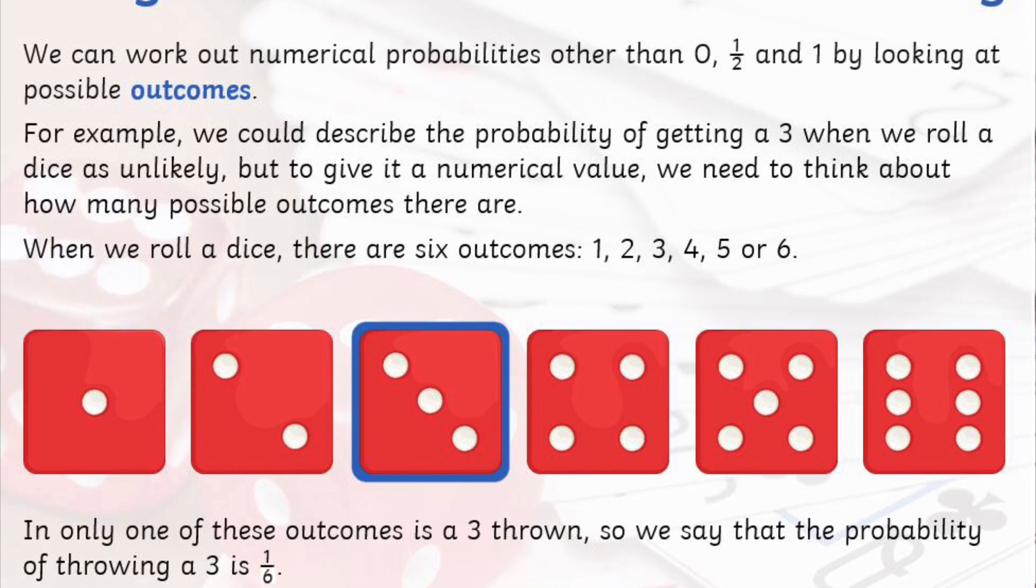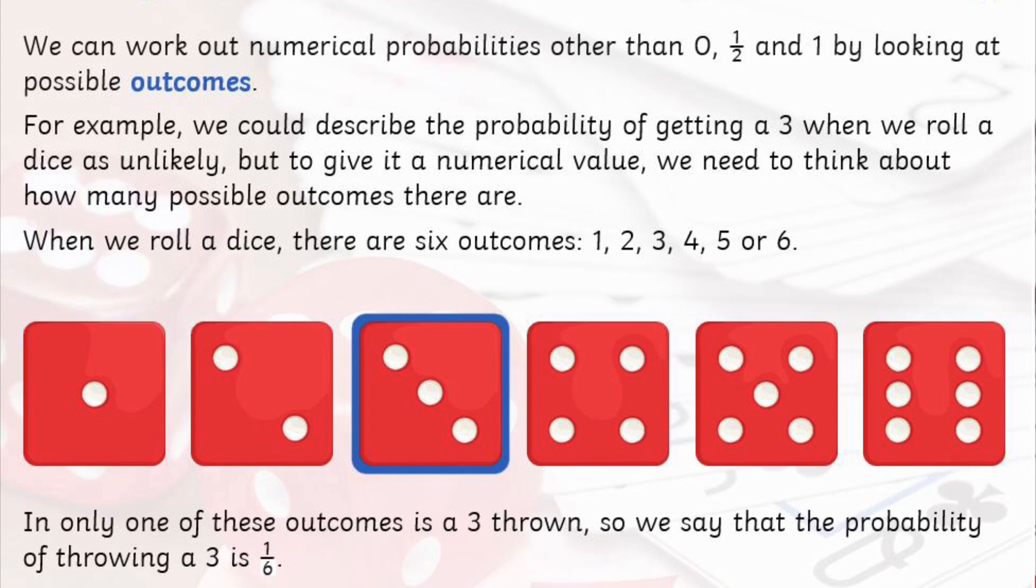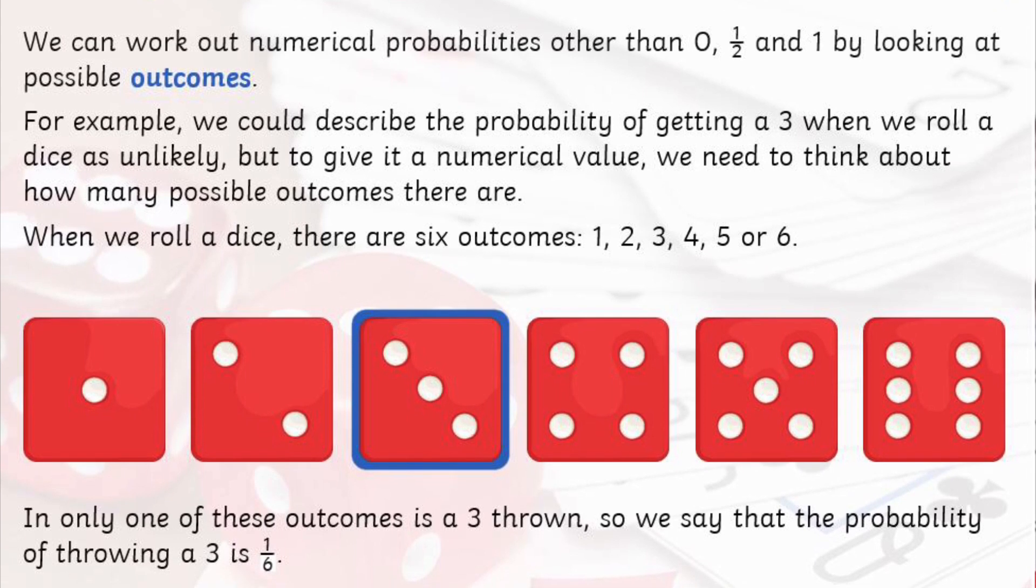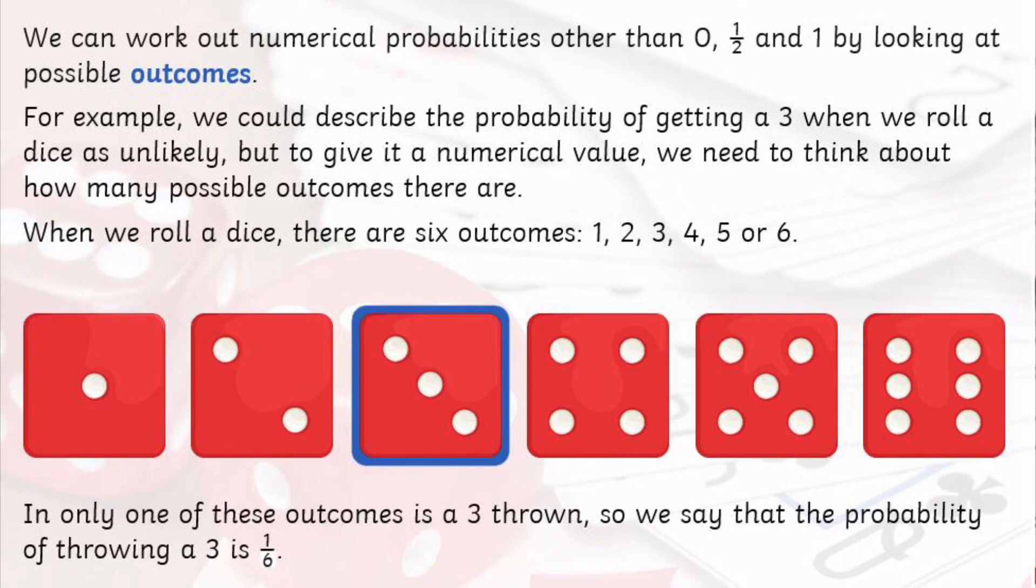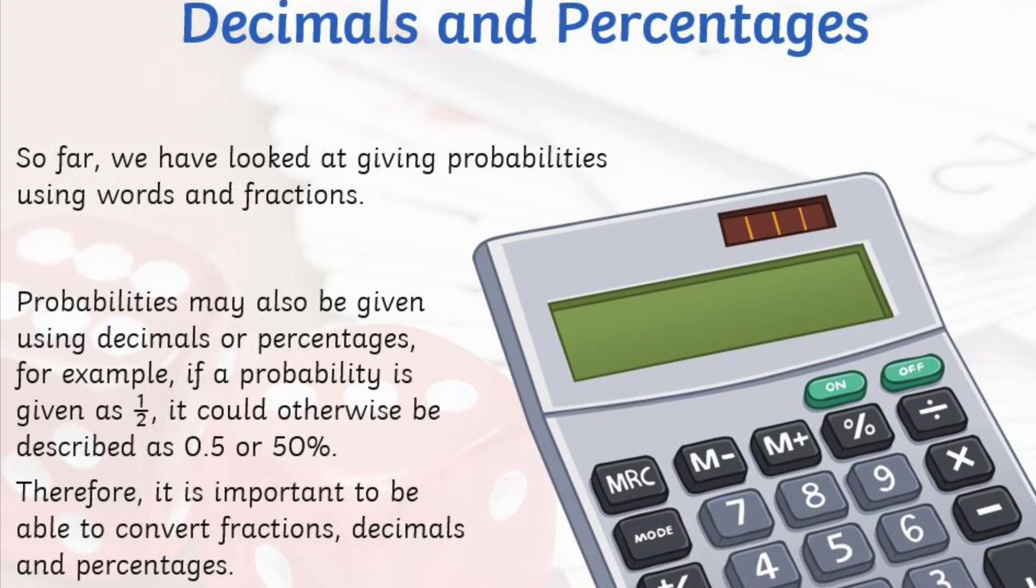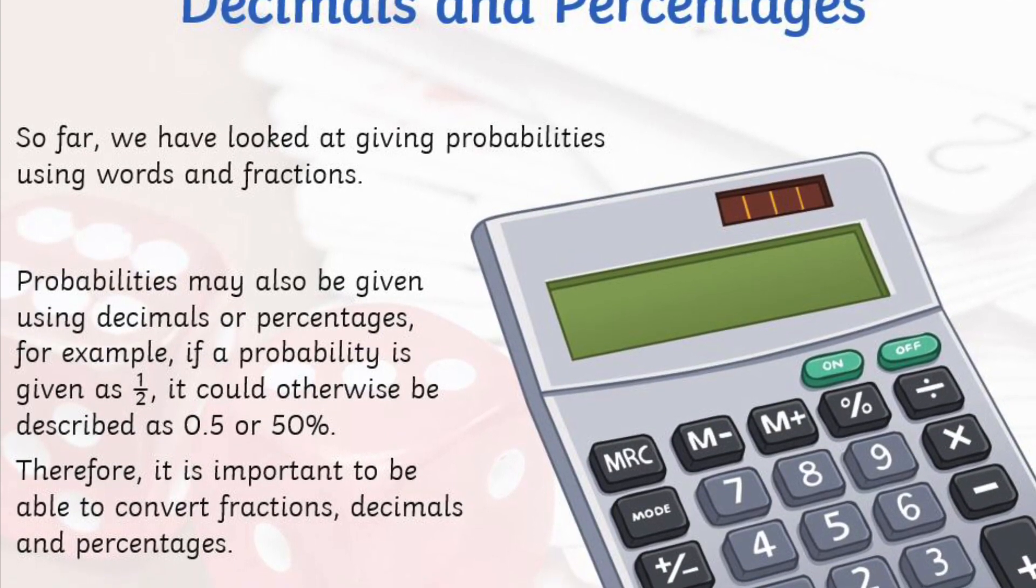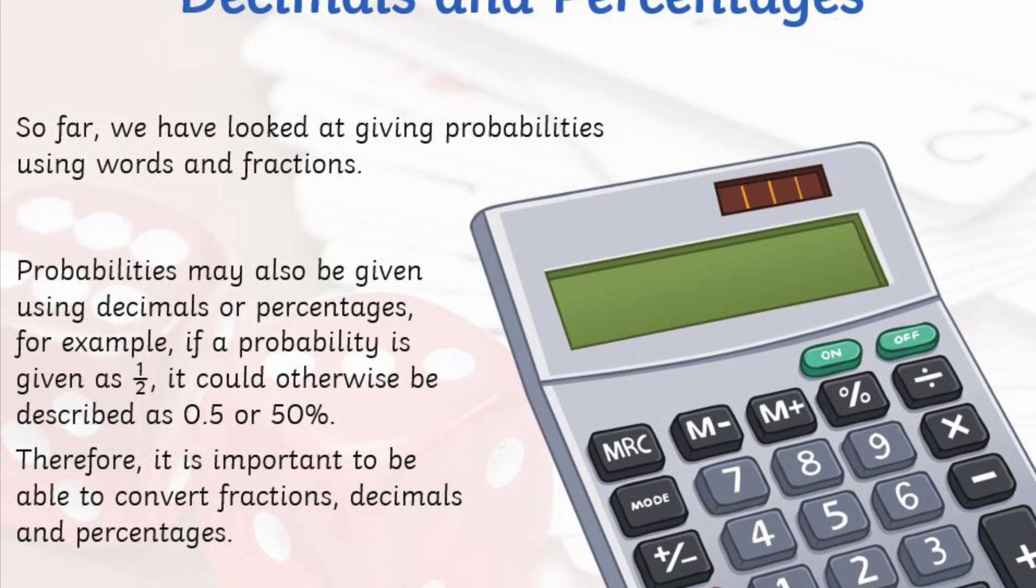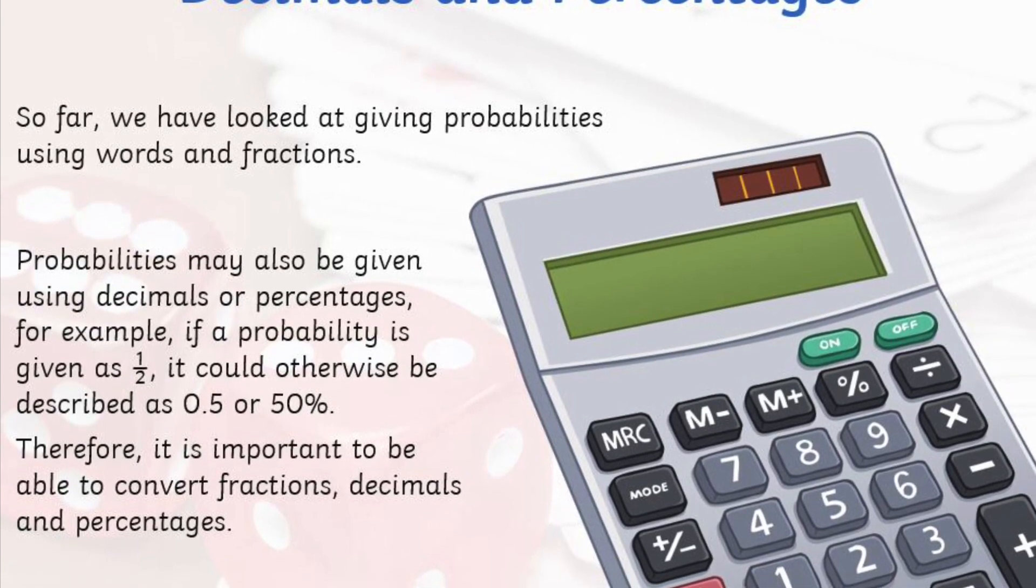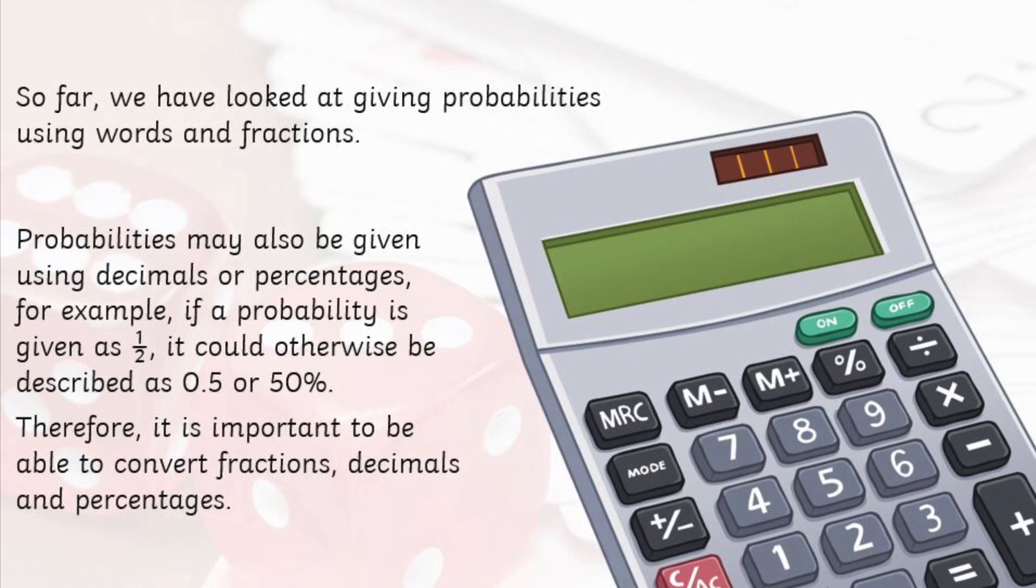Now it's worth noting that probabilities are most commonly shown as fractions in the transfer test. However, probabilities can also be shown as decimals or percentages. A probability of half can also be shown as 0.5 or 50%. Therefore, it's important to know your common fractions, decimal, and percentage conversions off by heart. So really give some time to committing those to memory.